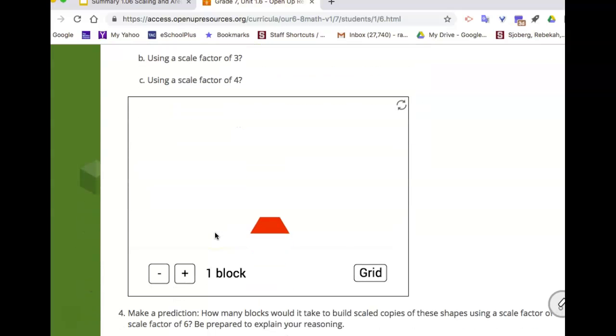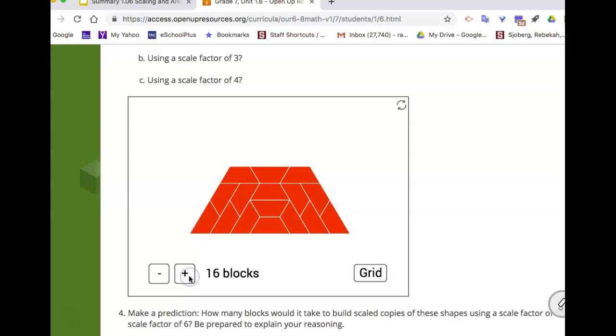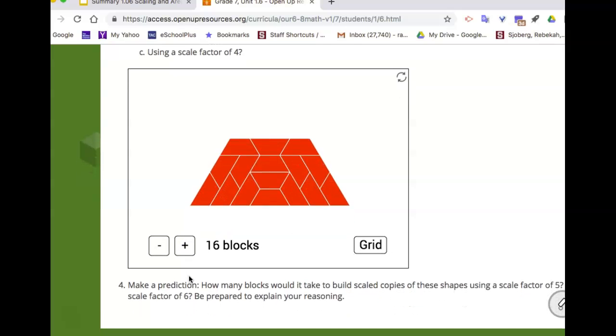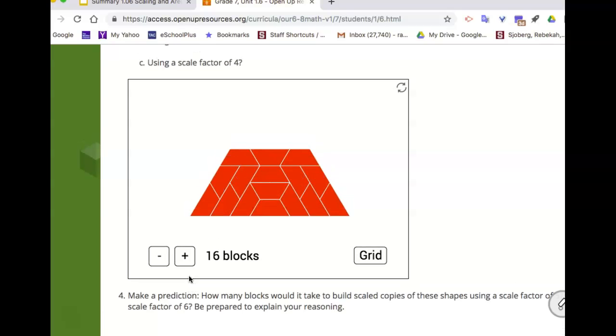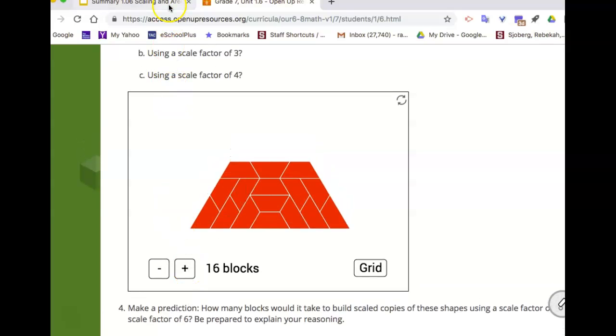We also looked at that trapezoid, this was the tricky one and it was the same idea. Four to make it twice as long, nine made it three times as long, sixteen made it four times as long, and we were looking at these relationships between the side length and the scale factor there.